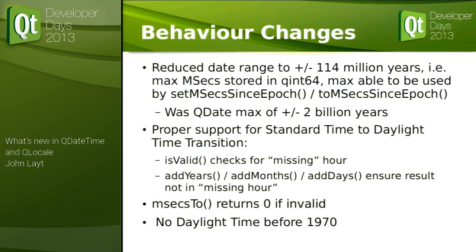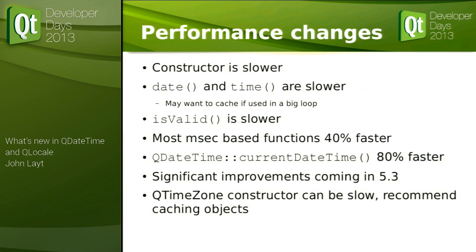Behavior changes from the move to milliseconds storage: we have a reduced date range — only 114 million years instead of two billion, but I don't think too many people are using that. We now do proper support for the standard time to daylight time transition — the missing hour when we leap forward from 2am to 3am. Before, you could call addYear() and end up in that gap with bad results; that now doesn't happen. Also, toMSecsSinceEpoch() now returns zero if it's invalid instead of some huge random number.